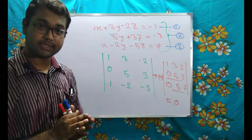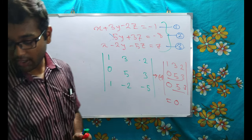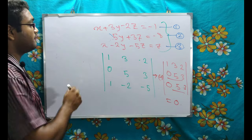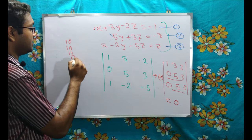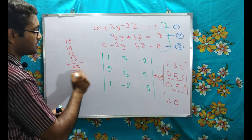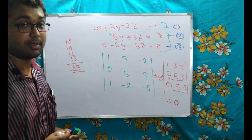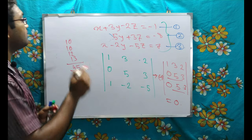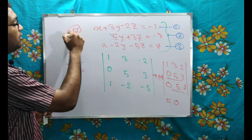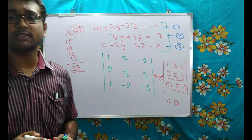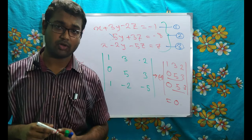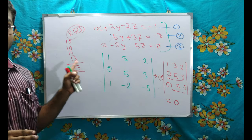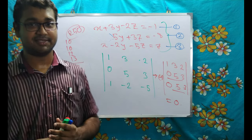So in total we have done 10 + 10 + 12 + 13 = 45 marks worth of questions from UPSC maths optional Paper 1, whose total marks are 250. Linear algebra itself consists of almost one-fifth of the total marks, which shows how important this linear algebra portion is.